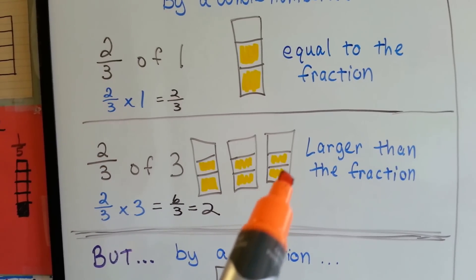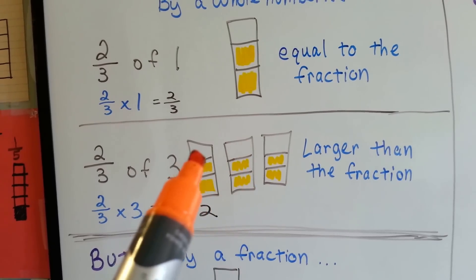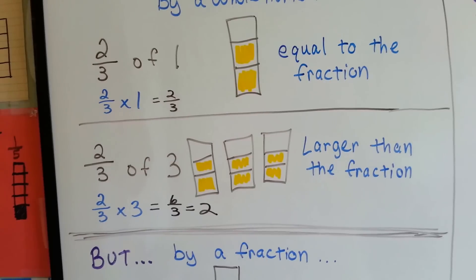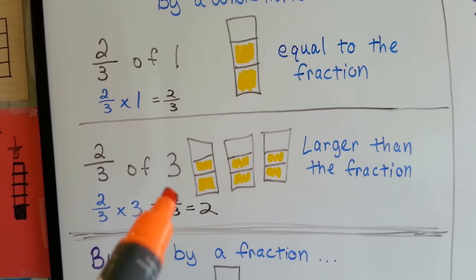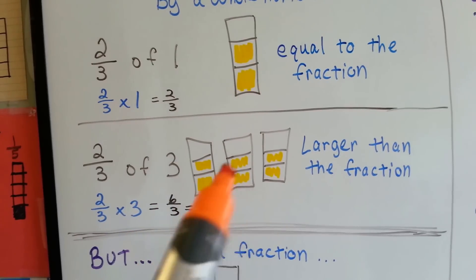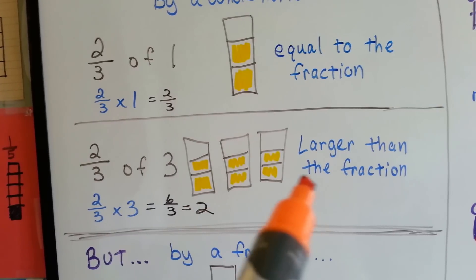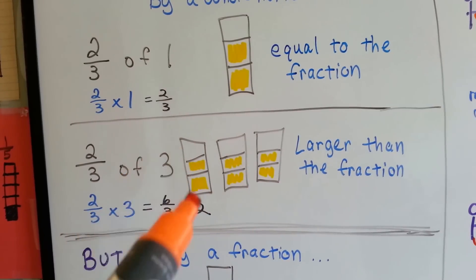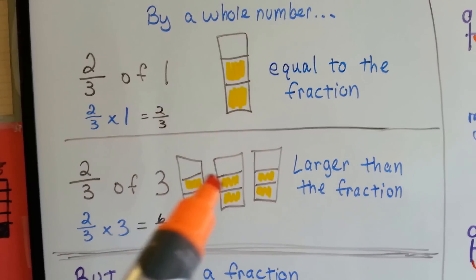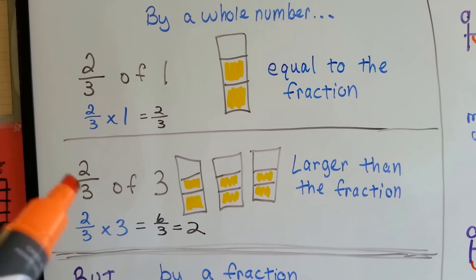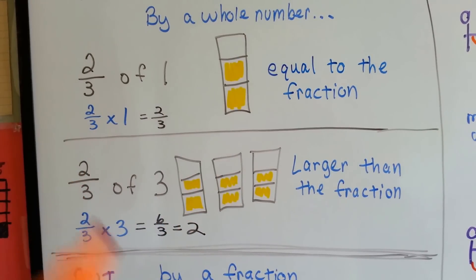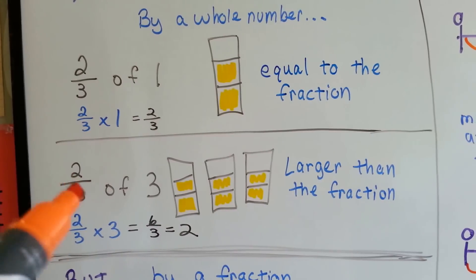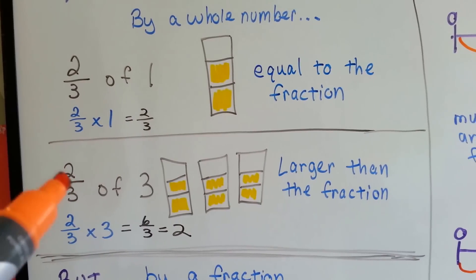If we took this one and this one and filled in here and here, we'd have two full bars. It would equal two whole, because it's six-thirds, which is equal to two whole — we're just putting this one and this one here and here and making two complete bars. So that's more than the two-thirds. So when we multiply a fraction by a whole number, it's going to be more than that fraction.